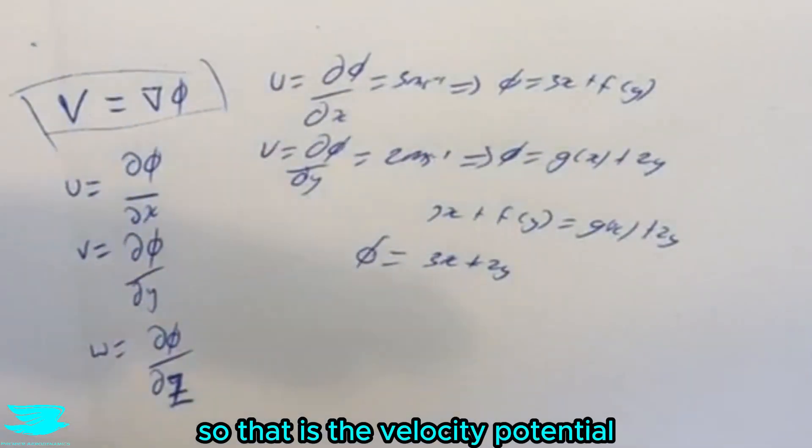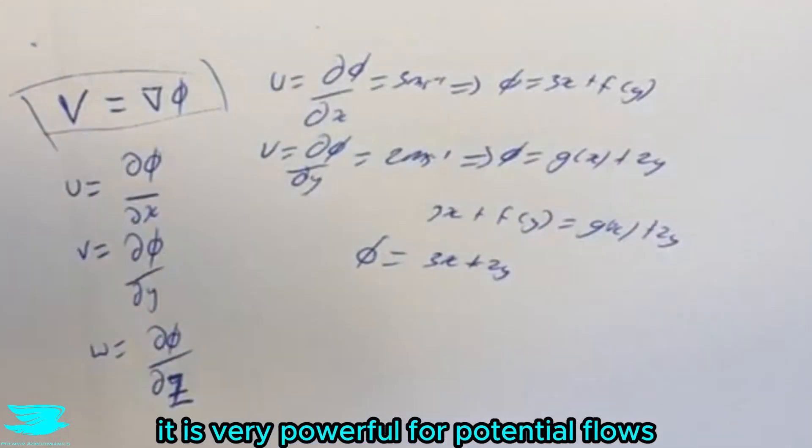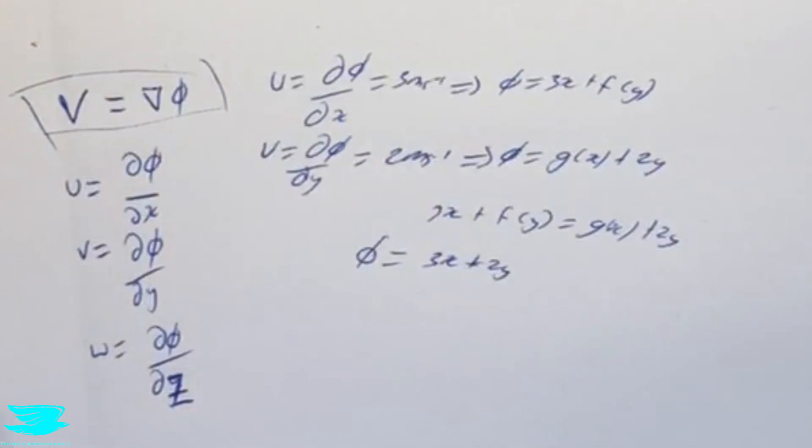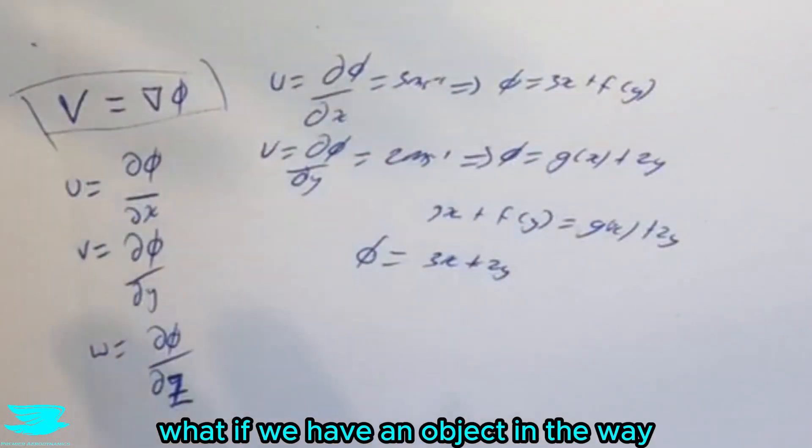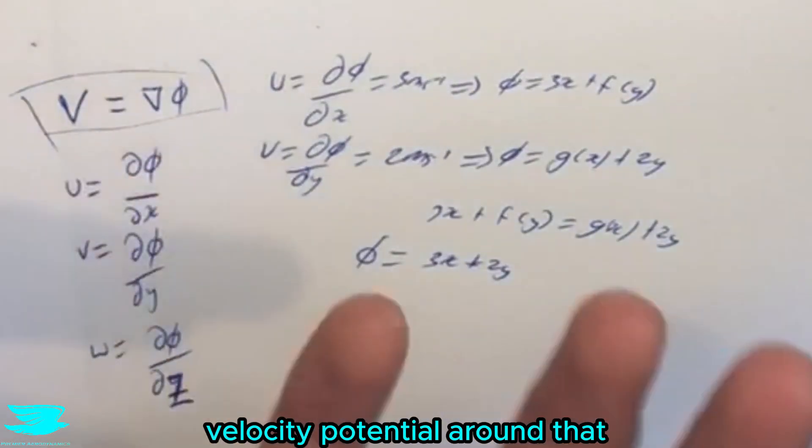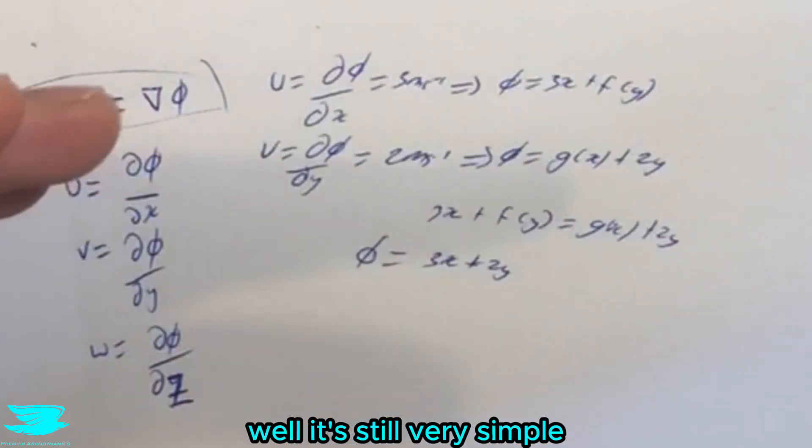So that is the velocity potential and how we use it. It's very powerful for potential flows. Now we went through a very simple example here and you might be thinking, well what if we have an object in the way, how do we calculate the velocity potential around that? Well it's still very simple, it's the same way as this, but now we start to introduce things called sources, sinks, doublets, that kind of thing.